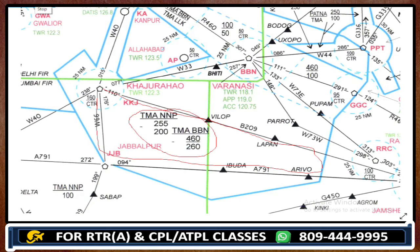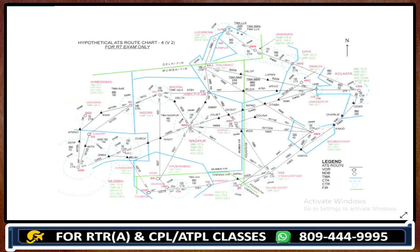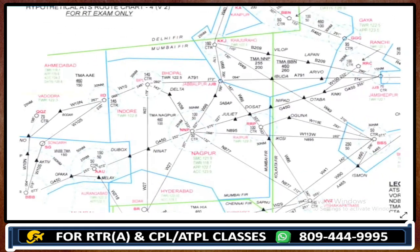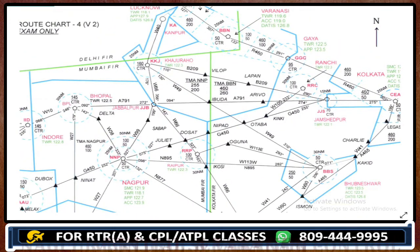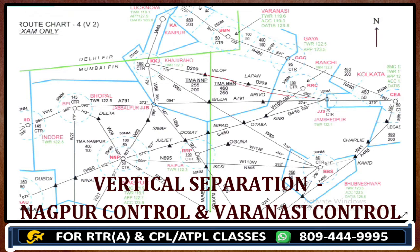This is chart number 4. In this chart we would discuss where the vertical separation is. Look over here — this area is vertically separated. Again, that is Nagpur control and this is Varanasi control. This is how we can identify the controls. This is how vertical separation works, and whenever we are flying in this zone we have to be careful which ATC to call at what height.